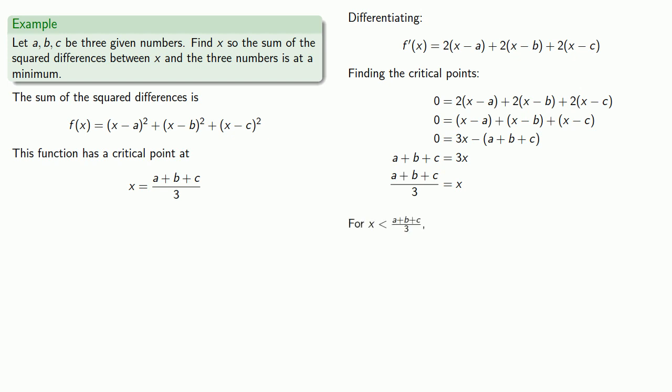If x is less than this, then 3x will be less than a + b + c, and so the derivative will be negative, and f(x) decreases until it reaches this point.